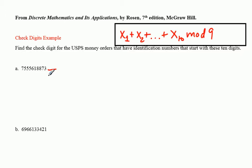All I have to do is follow this red expression. I have to evaluate this expression in the box up here for each of these tracking numbers or identification numbers. So the first one, all I have to do is add up all these digits in the number for those ten digits. So 7 plus 5 plus 5 plus 5 plus 6 plus 1 plus 8 plus 8 plus 7 plus 3.